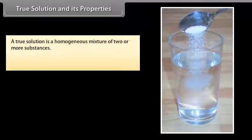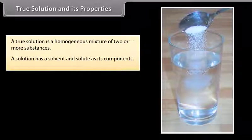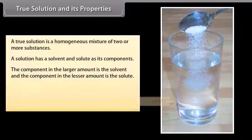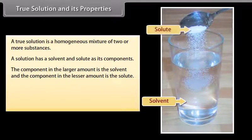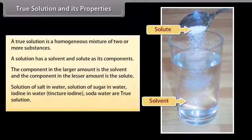A true solution is a homogeneous mixture of two or more substances. A solution has a solvent and solute as its components. The component in the larger amount is the solvent, and the component in the lesser amount is the solute. Examples of true solutions include: solution of salt in water, sugar in water, iodine in water, tincture iodine, and soda water.